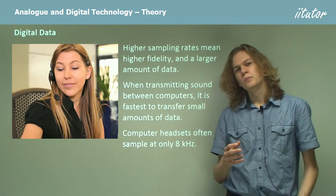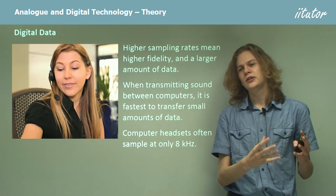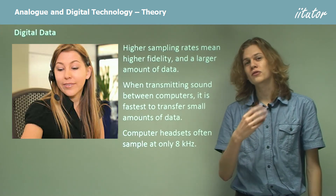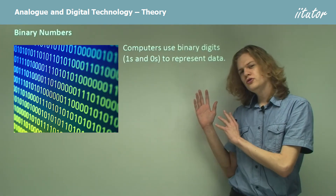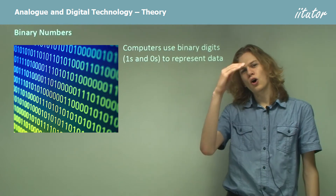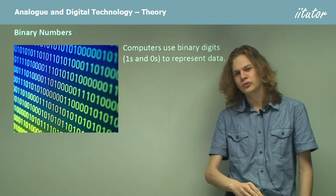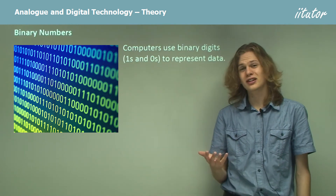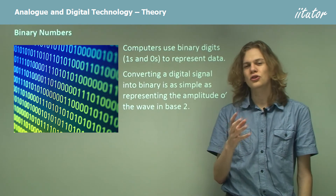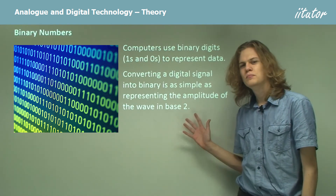On the plus side, because it's quite low fidelity and a low sampling rate, there's only a small amount of data to transmit, which means the data can be sent in real time and it's possible to have a conversation with someone over the net. Computers use binary digits — ones and zeros — to read data, but in the digital recordings shown earlier there were a whole number of different levels the data could be at, not just ones and zeros.